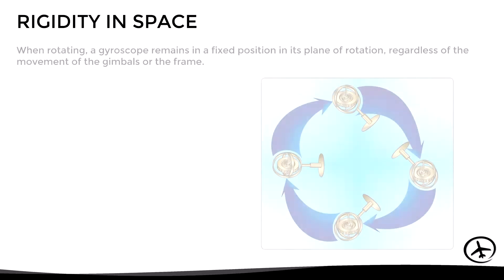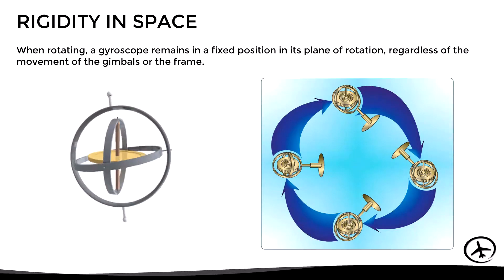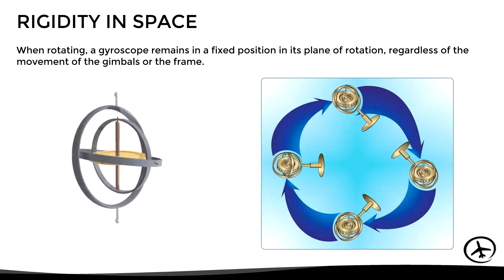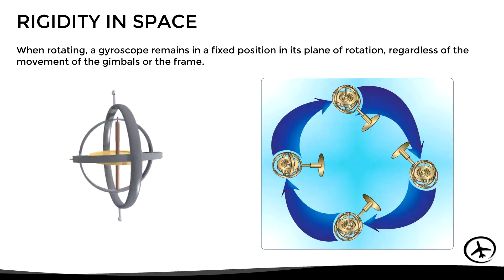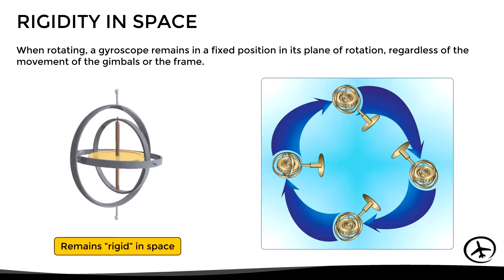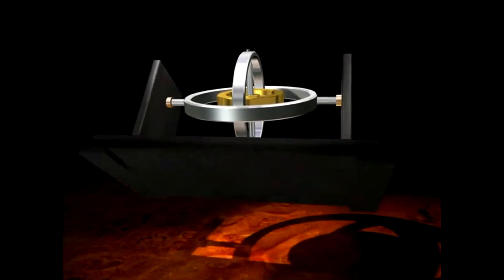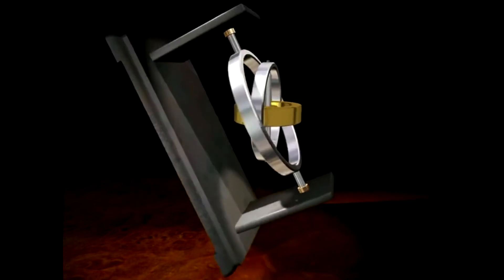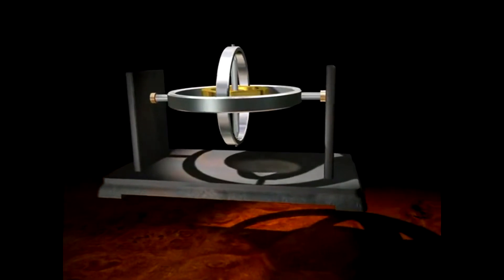Rigidity in space establishes that when the rotor of the gyro spins, it remains in a fixed position in its plane of rotation, regardless of the movement of the gimbals or the frame. As we can see in this example, although the gimbals and frame move, the rotor remains rigid in space. We can better appreciate this effect with another example — independently of the movement of the frame or the gimbals, the rotor maintains its axis of rotation rigid in space.